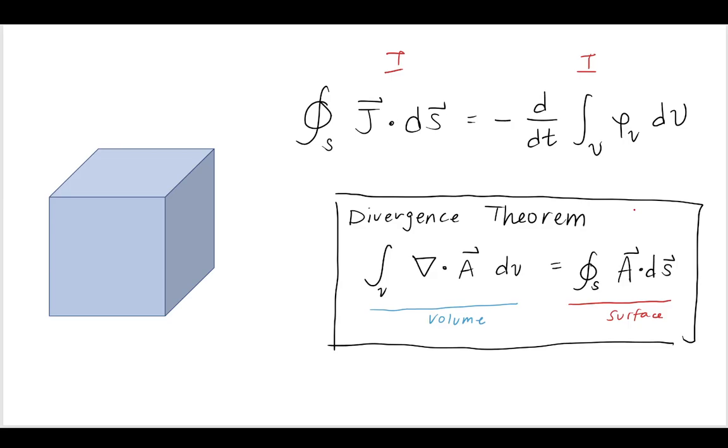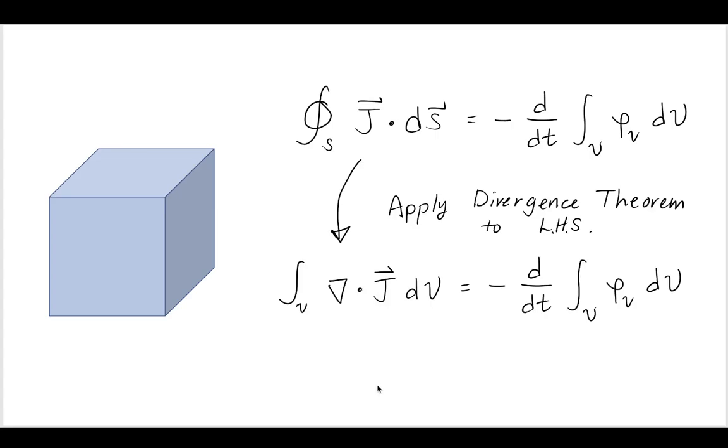And then, if you recall from your mathematics courses, we have the divergence theorem, which relates volume integrals and surface integrals. We can see on the left-hand side that this is a closed-surface integral. And if we apply the divergence theorem to that left-hand side, we can convert this to the divergence of that vector J. Now, we have applied the divergence theorem to the left-hand side to get this expression.